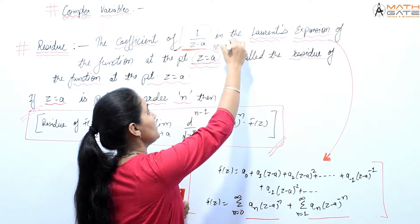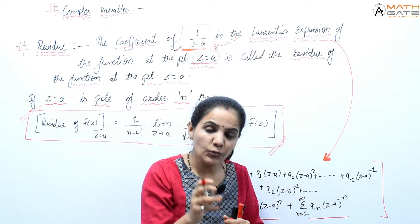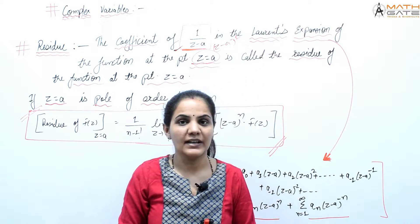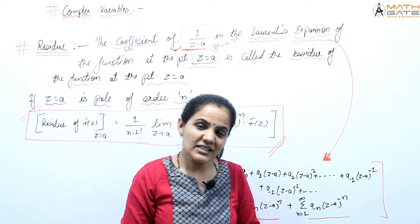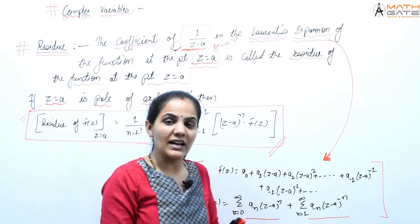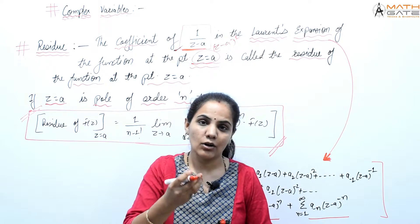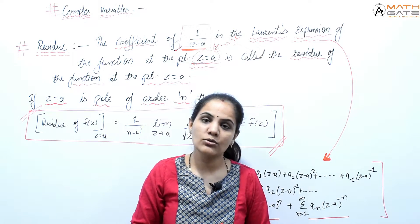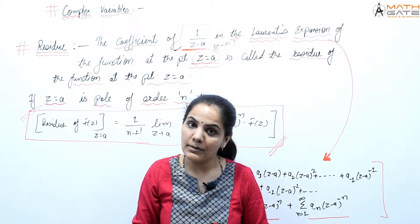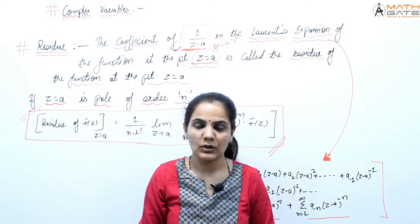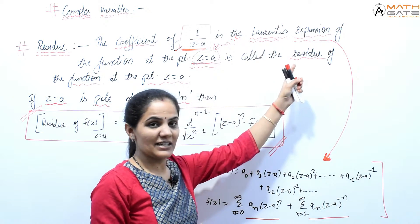The coefficient of (z−a)^(−1), i.e., 1/(z−a), in the Laurent series expansion is called the residue. Now, how can this residue be found? A pole can be of order one, order two, or order n. So first let's talk about the Laurent series expansion.